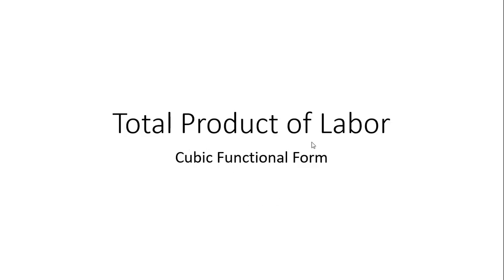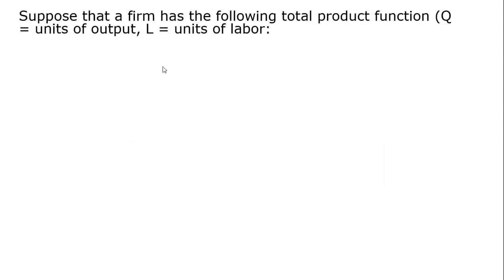Hello. In this video, we're going to look at a total product of labor function, and this function will have a cubic form. So suppose that a firm has the following total product function, where Q is units of output and L equals units of labor.